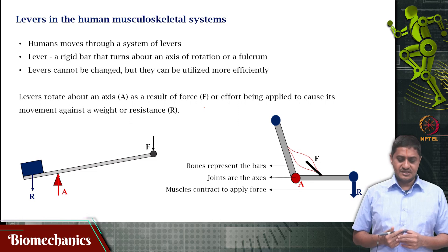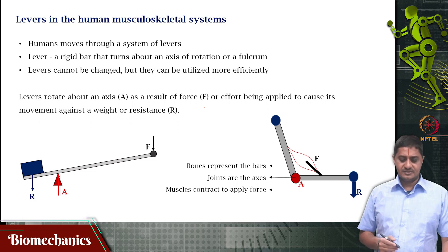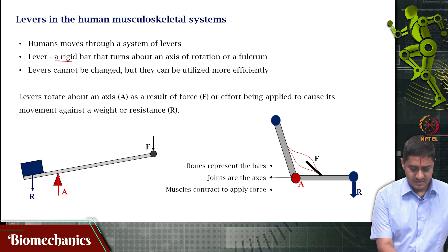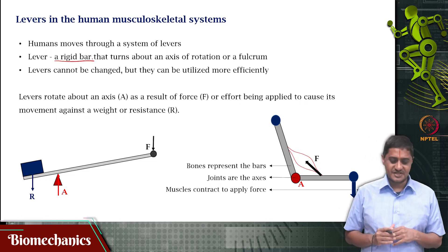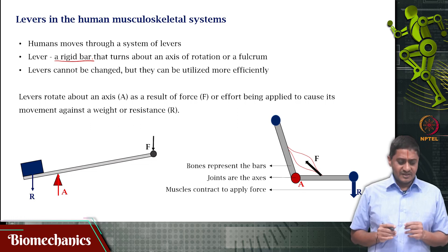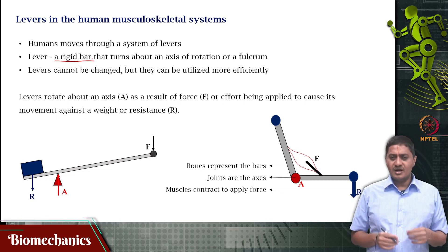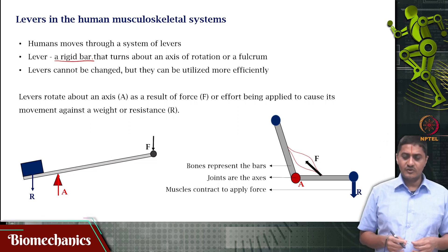Human movements are essentially happening through a combination — through a set of levers, through a system of levers. A lever is a rigid bar that turns about an axis of rotation or a fulcrum; this is something that we know from high school physics. In this case, in the human body, what is the rigid bar and what is the fulcrum that we are discussing? For almost all the cases, you could consider that the bone is the rigid body under discussion — the bone is a rigid bar that turns about the axis of rotation.